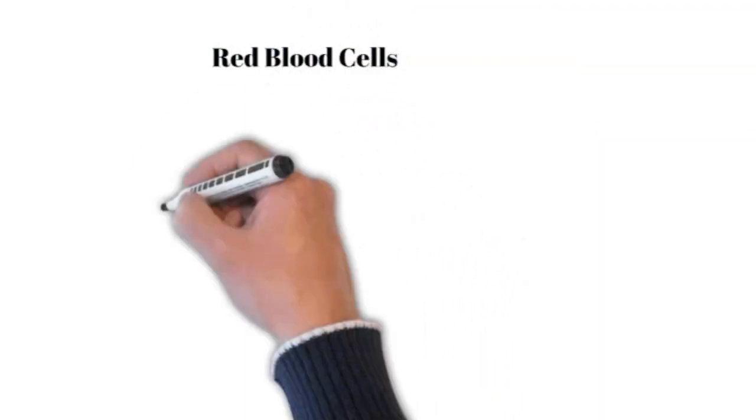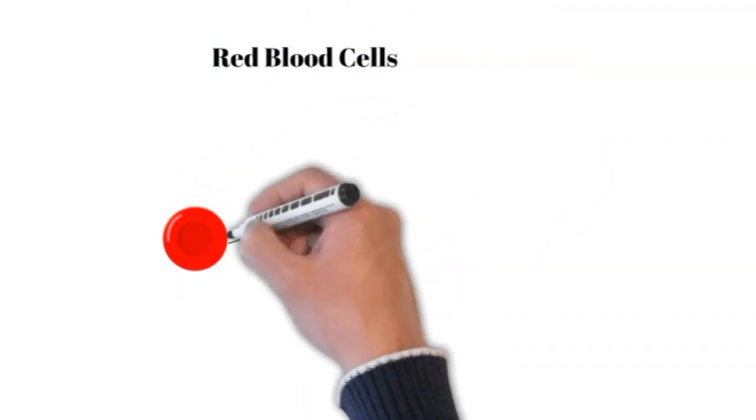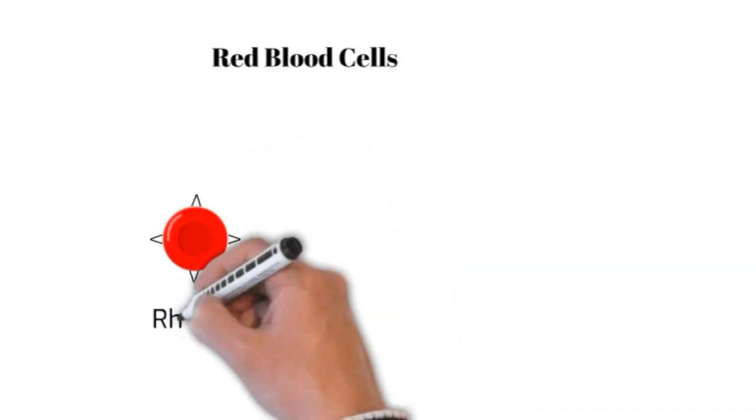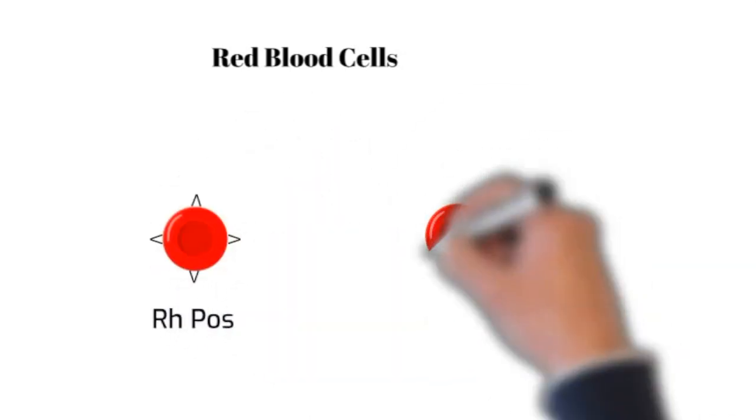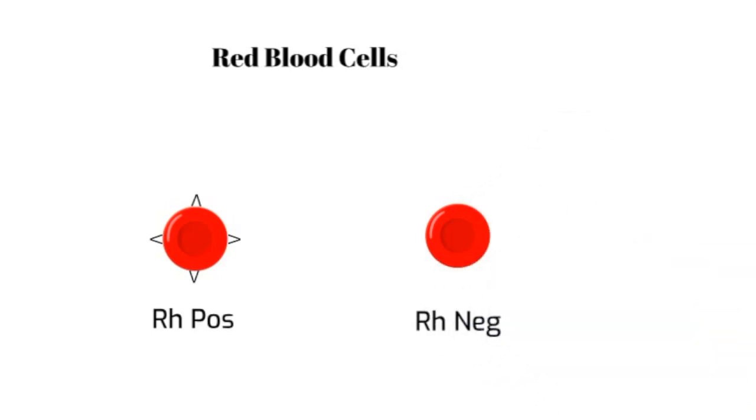Let's look at the red blood cells. Those are the cells responsible for transporting oxygen in our body. In addition to the ABO group, they are classified into RH positive if they have the RH antigen on their surface or RH negative if they don't.